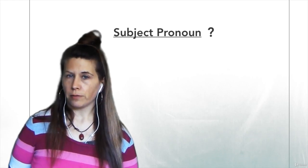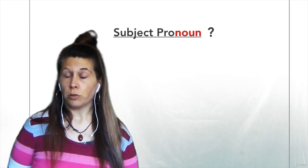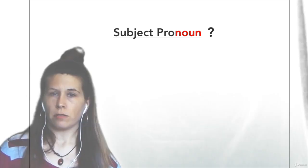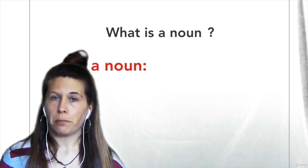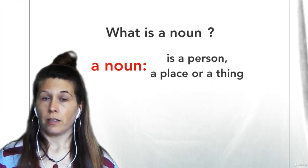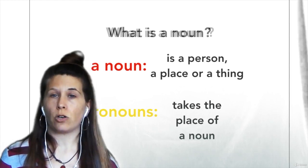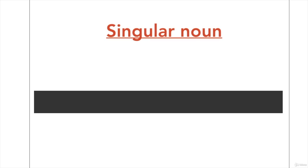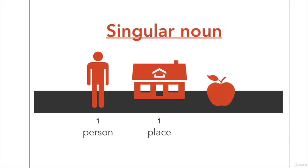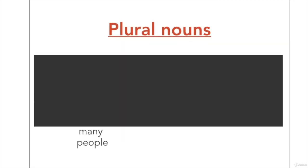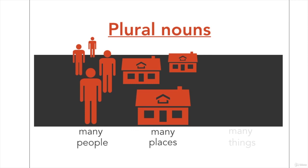What is a subject pronoun? Do you see the word noun? This gives you a clue. A pronoun is like a noun. What is a noun? A noun is a person, a place, or a thing. A pronoun takes the place of a noun, which is a person, a place, or a thing. A singular noun is one person, one place, or one thing. Plural nouns are many people, many places, or many things.